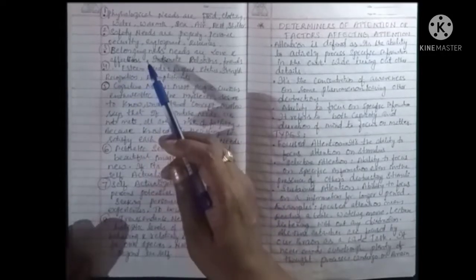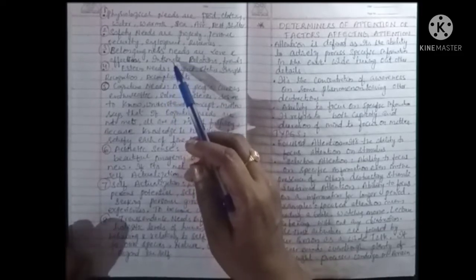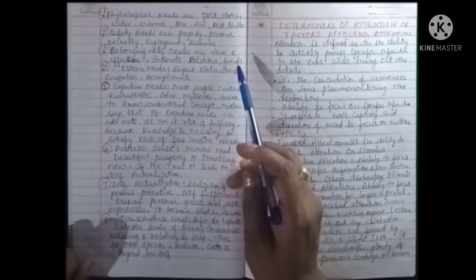The third level, belongingness needs, are love and affection, intimate relations with family and friends and so on.